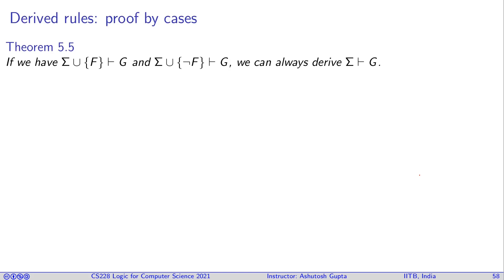So let's see how would you write down informally proof by cases. If we assume F we can derive G. If we assume not F then we can derive G. We can always derive G from sigma.